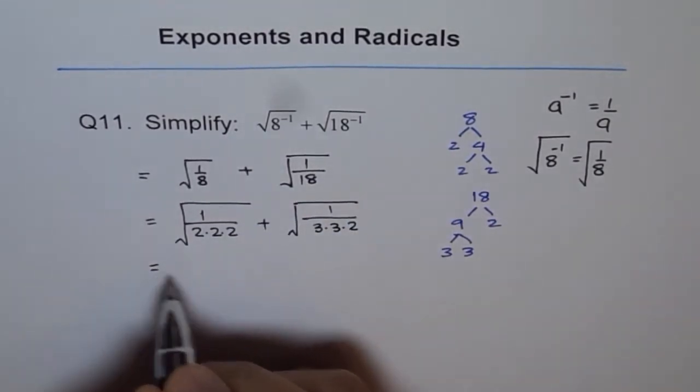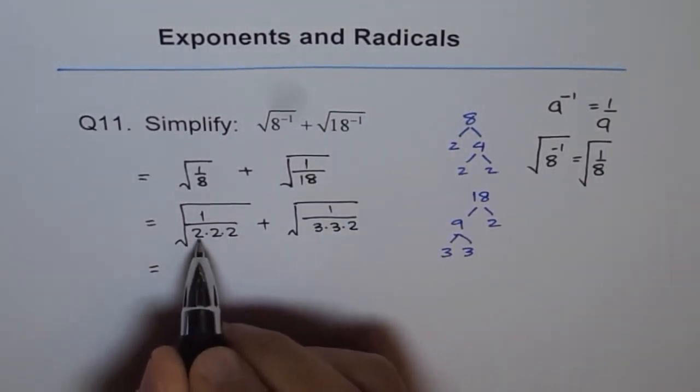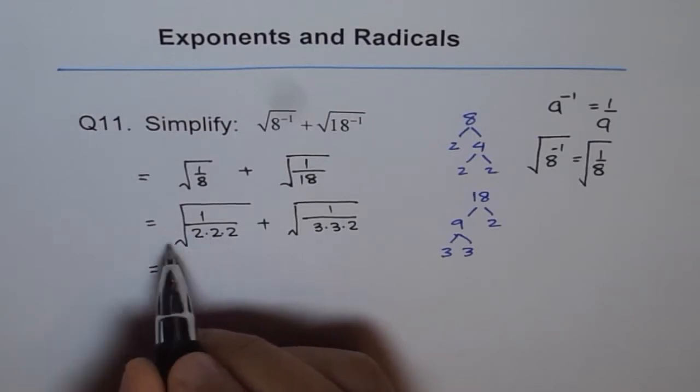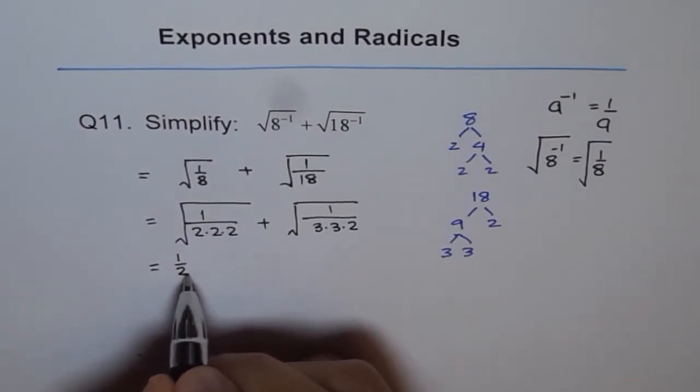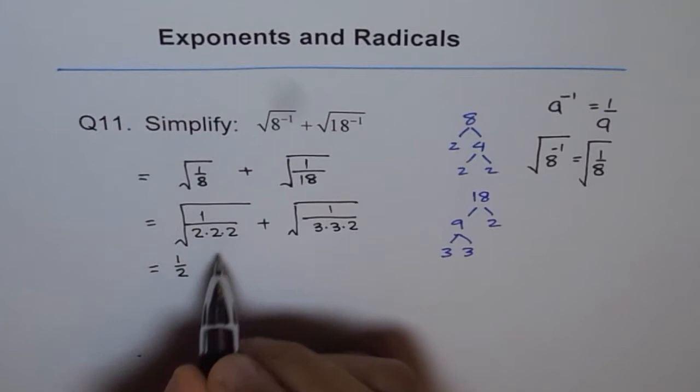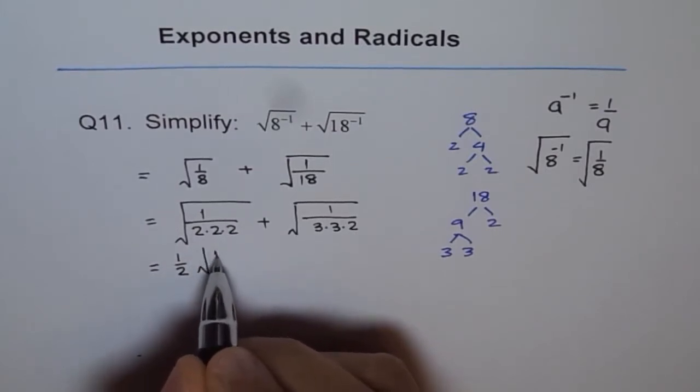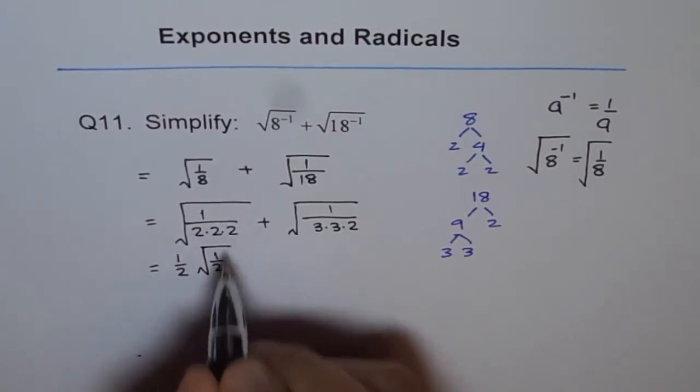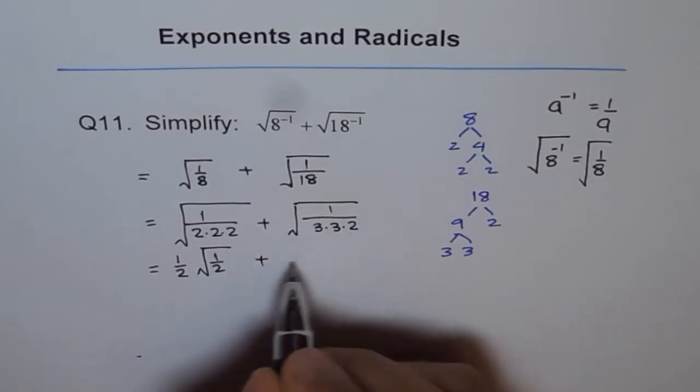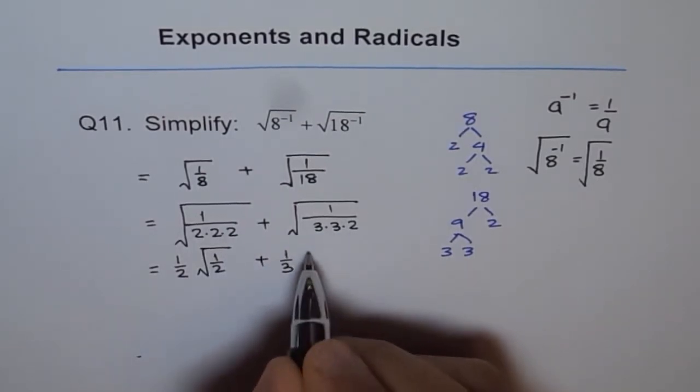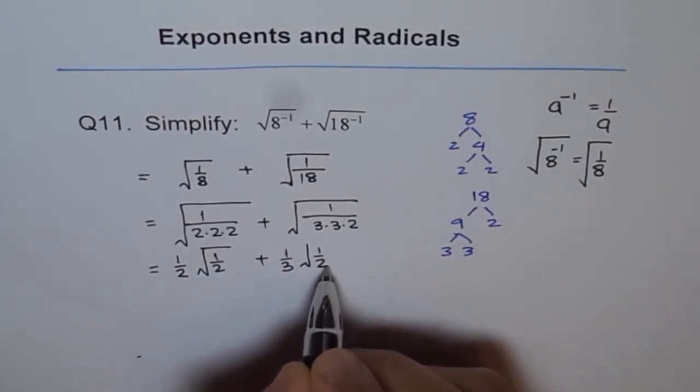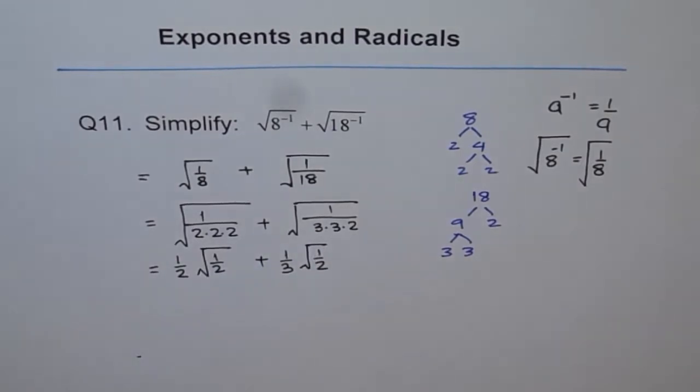So what we get here is, we can take 2 times 2, that is 2 outside. So it becomes half, it is 1 over 2. 1 over 2 times 1 over 2. And in the square root, I have half square root. Plus here similarly I have 1 over 3 square root of half.